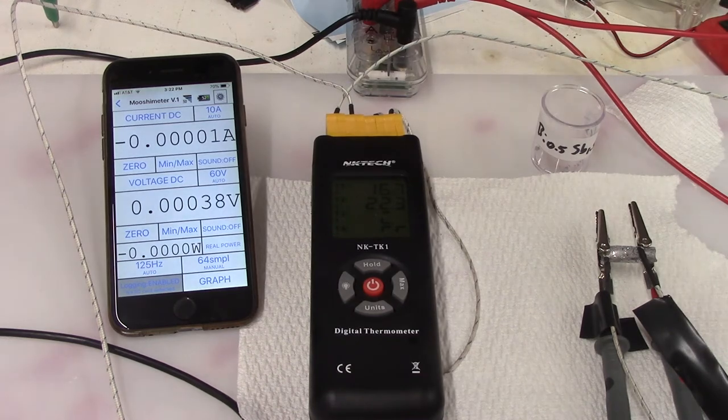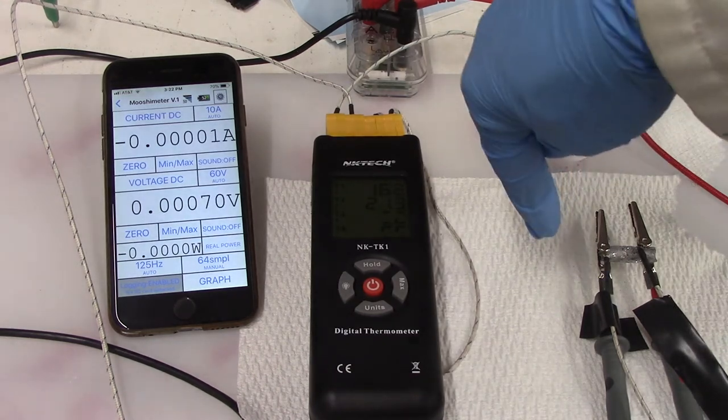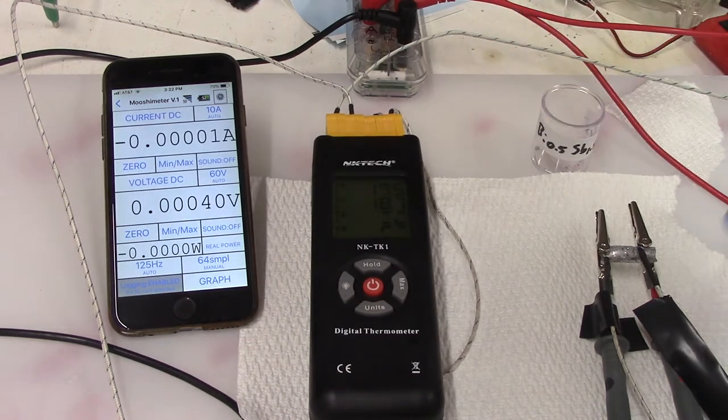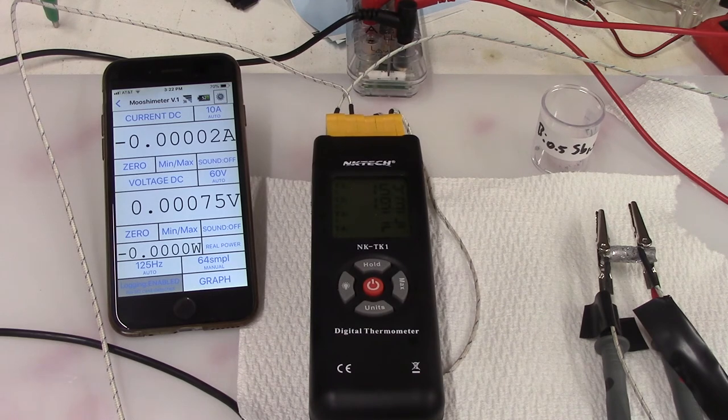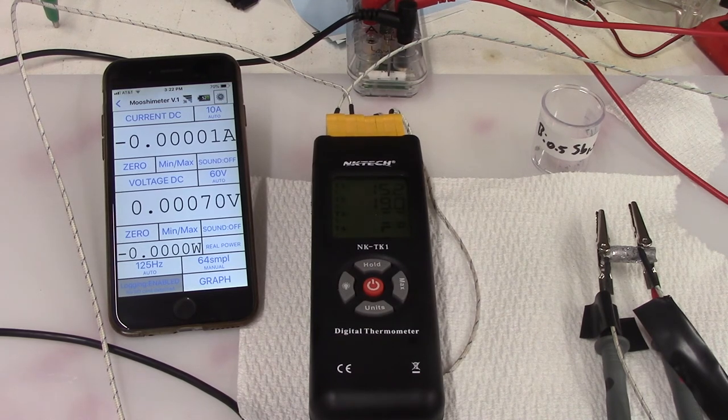I think we've demonstrated here that the voltage does go... When I heat the left side, it goes positive. When I heat the right side, it goes negative, which is the opposite of the N-type conductor. So I think we've had some success here. Thank you.